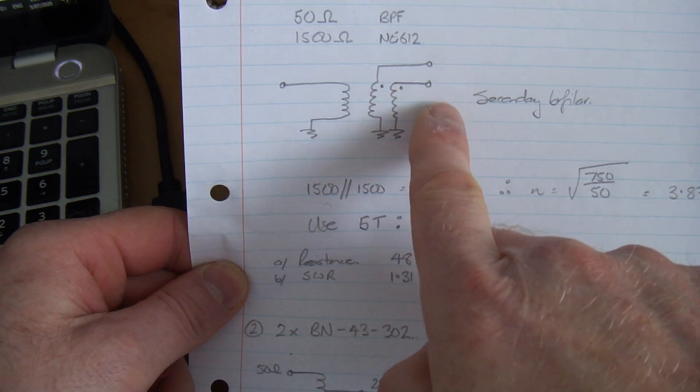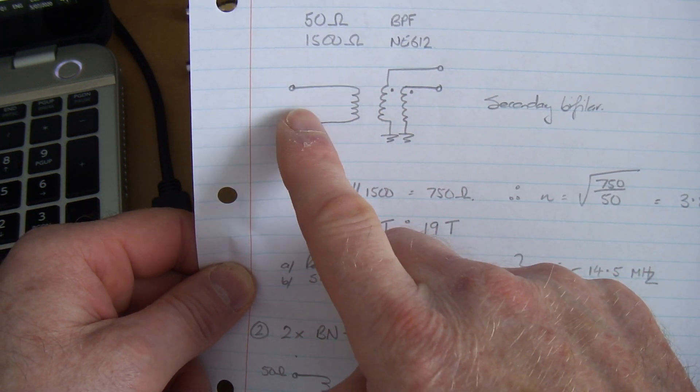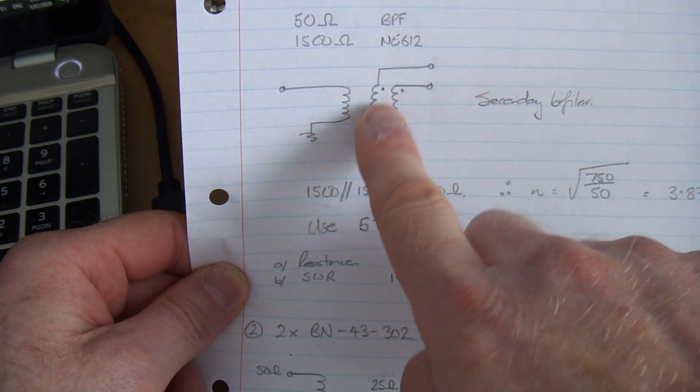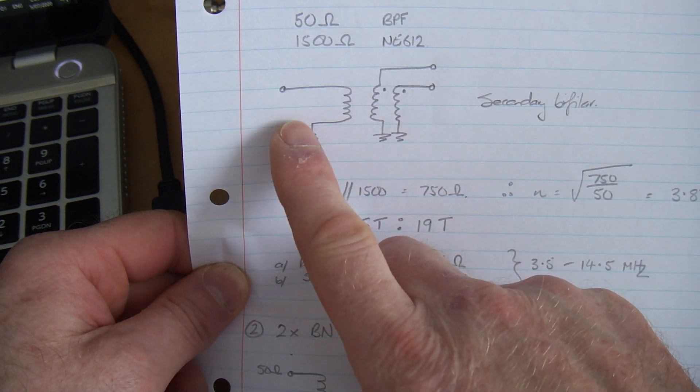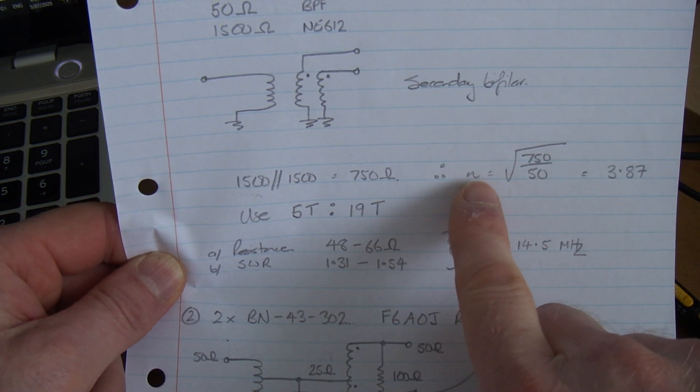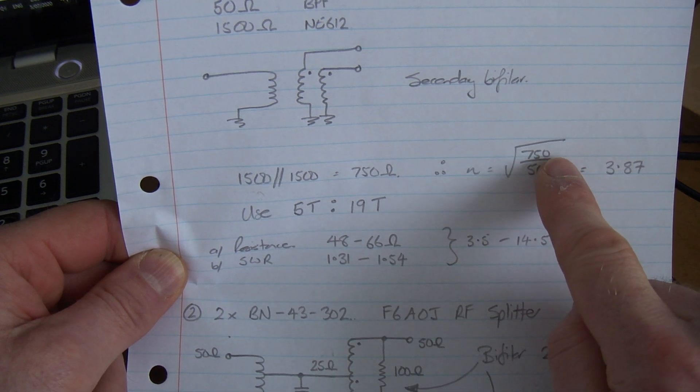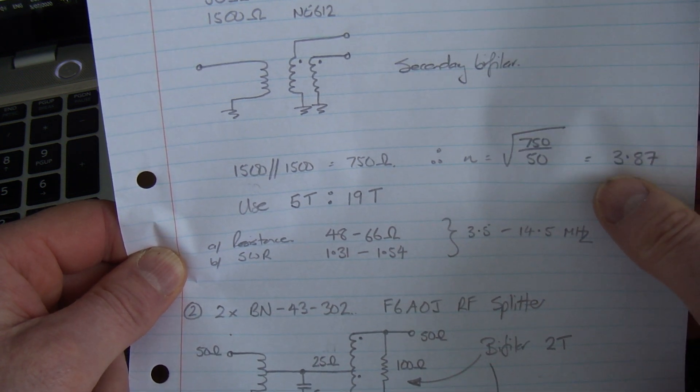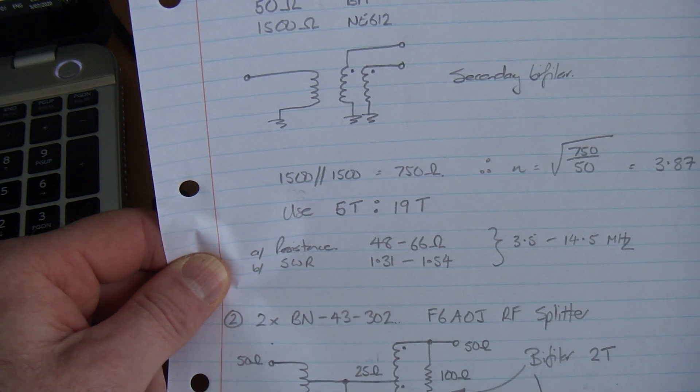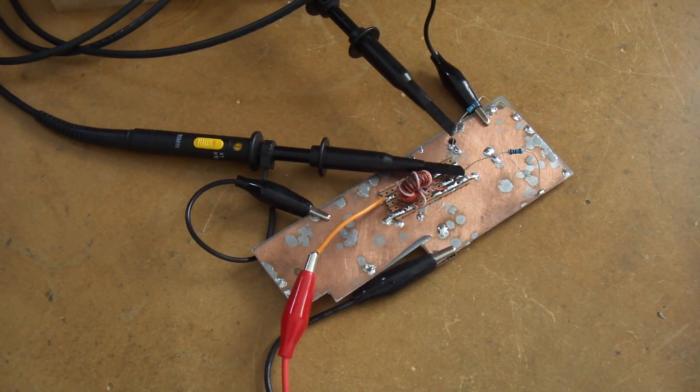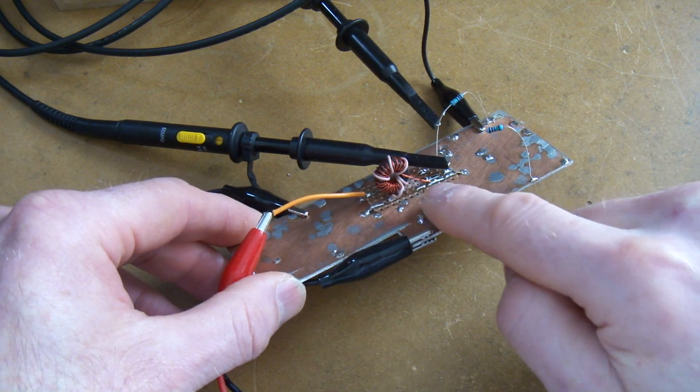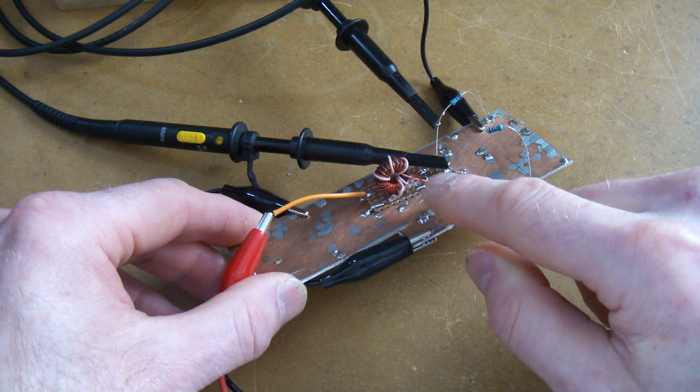I need to do some transformer action, noting that I need to transform that 50 ohms up into the 1500 ohms. I've got those two 1500s in parallel, so in terms of the secondary I'm matching 50 ohms to half of that, to 750 ohms. Therefore my turns ratio N is the square root of 750 ohms divided by 50, which comes out at 3.87. Close enough will be 5 turns to 19 turns. That's exactly what that is: 5 turns on the pink primary and the bifiler wound secondary is 19 turns.